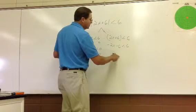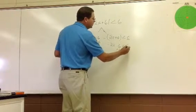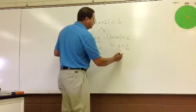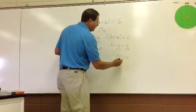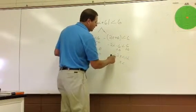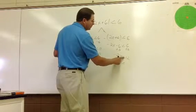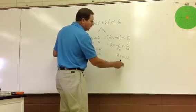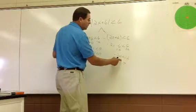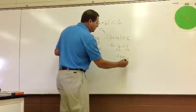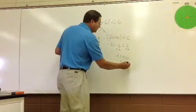We're going to add six to both sides. X is less than - notice the negative sign. Negative sign means when we multiply or divide by a negative number, we have to switch the sign. So it's going to be negative six.